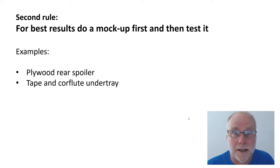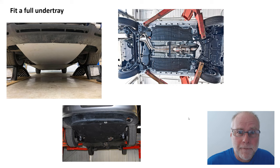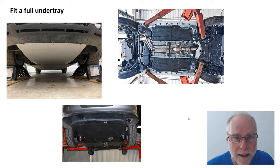So what are the three techniques? First one, fit a full undertray. This beats anything else you can do to reduce aerodynamic lift. Why? Because you're working on such a large area. You've got square meters, square yards of area under your car. And if you can reduce the pressure under the car, it acts over such a large area, it creates big forces.